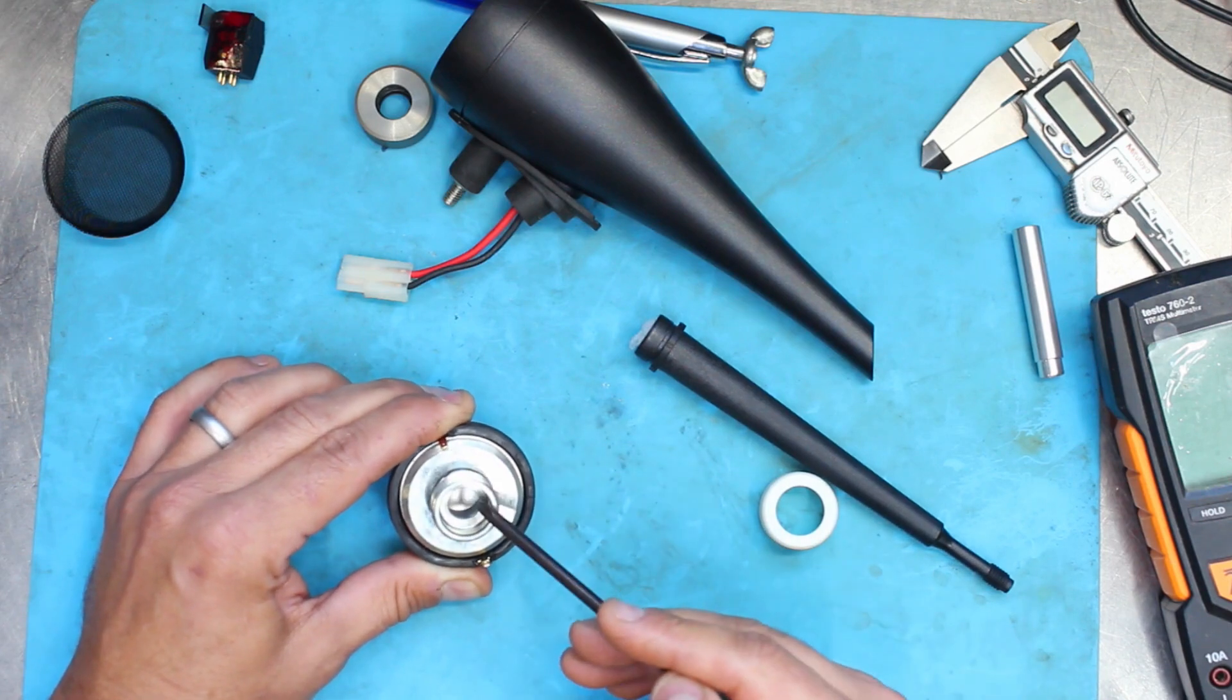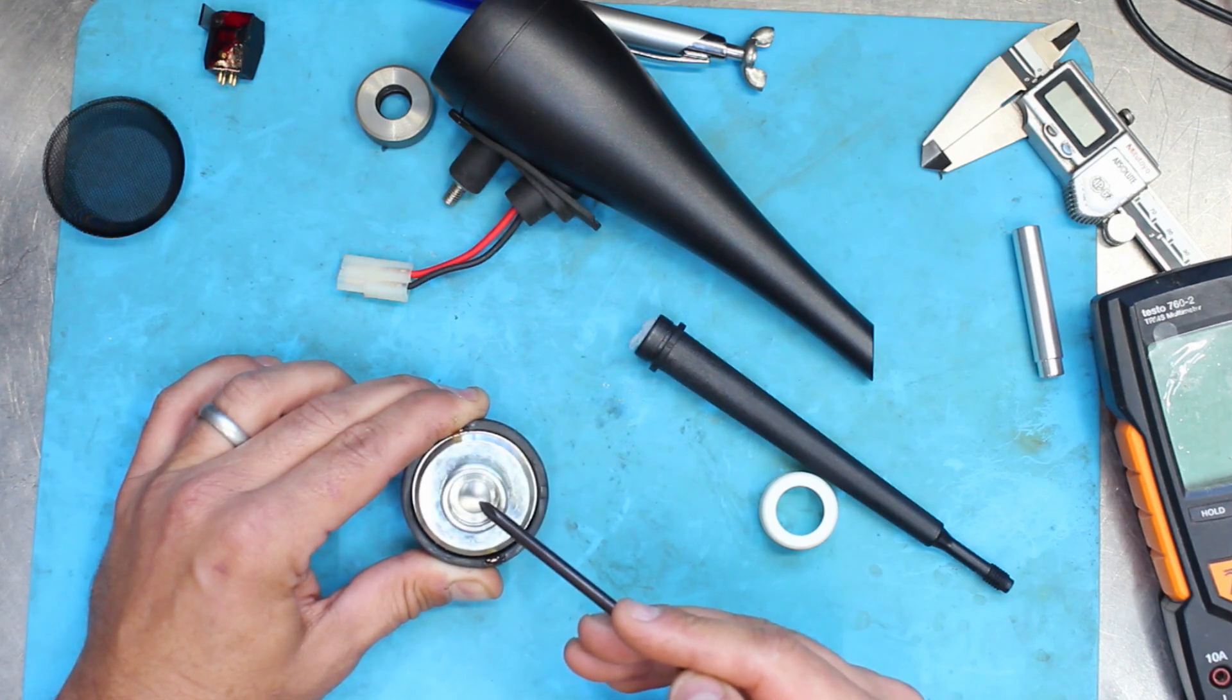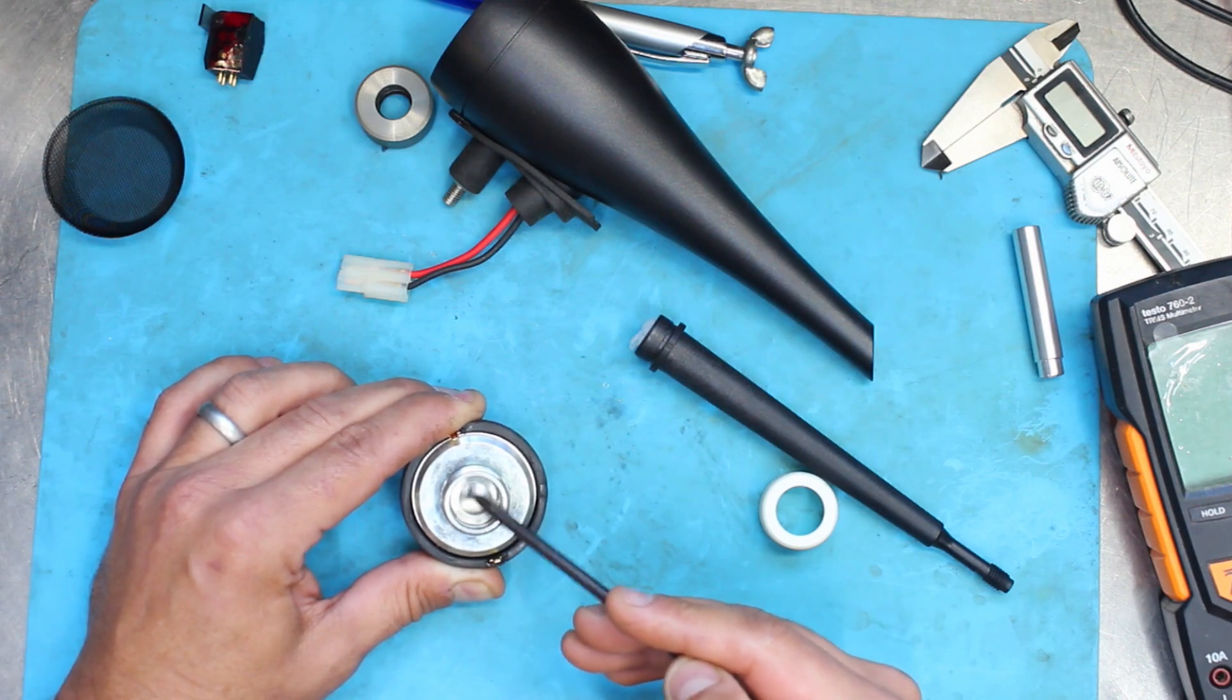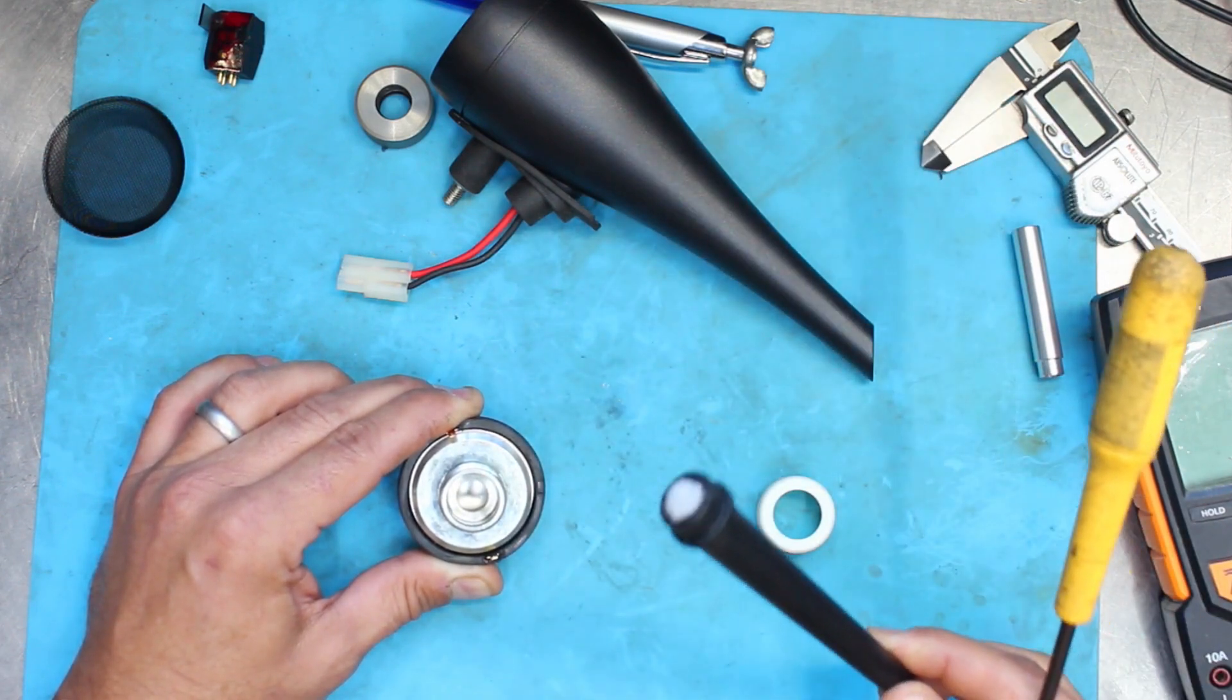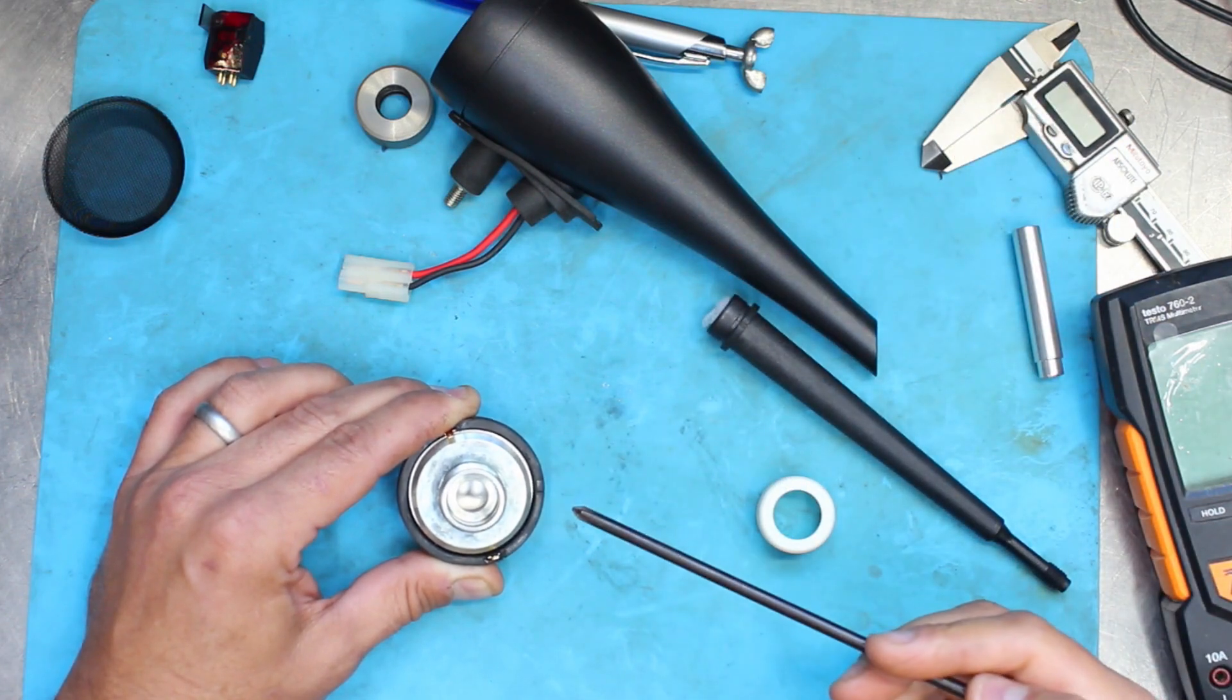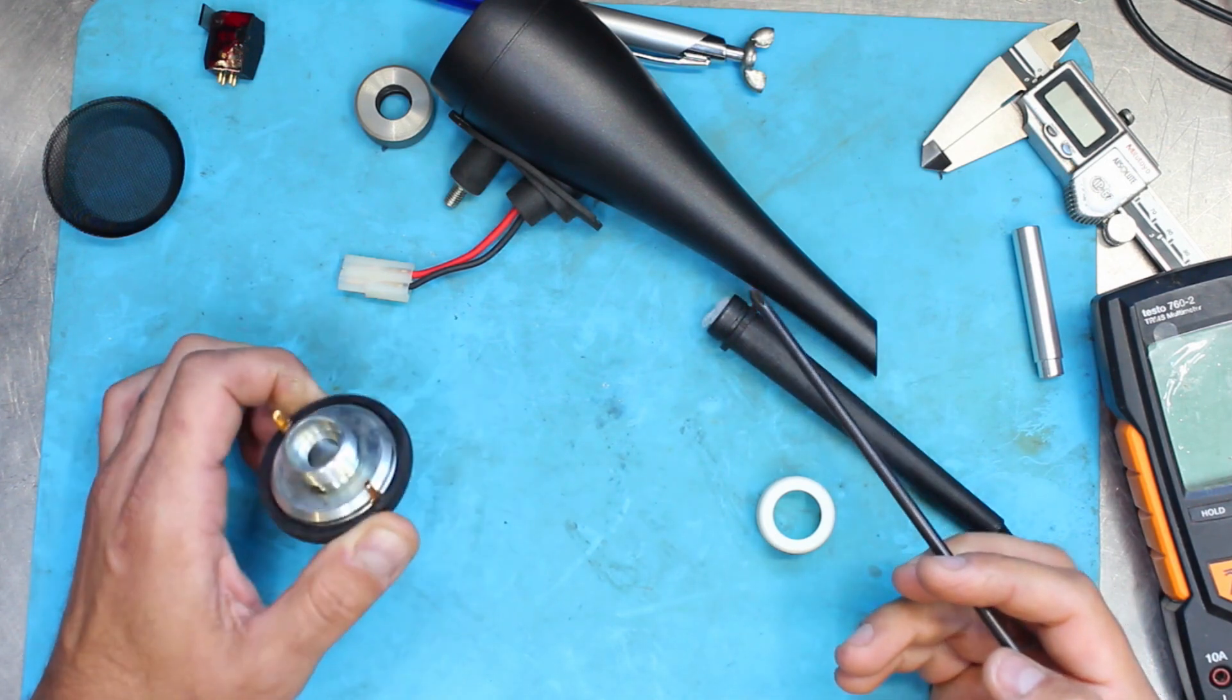But what makes this different to most other tweeters is that if we look through the back there, what you're actually looking at in that center hole is the rear of the driver itself. It's the rear of the aluminum dome. You wouldn't normally see that on most tweeters. And why that's hollow there is of course so the sound from the back of the driver can transfer through that hole and then down into this tube. So this is a functional design. It's not just to make it look pretty for sales and marketing, although you know it would be fair to say that there is a fair bit of that involved in this too.